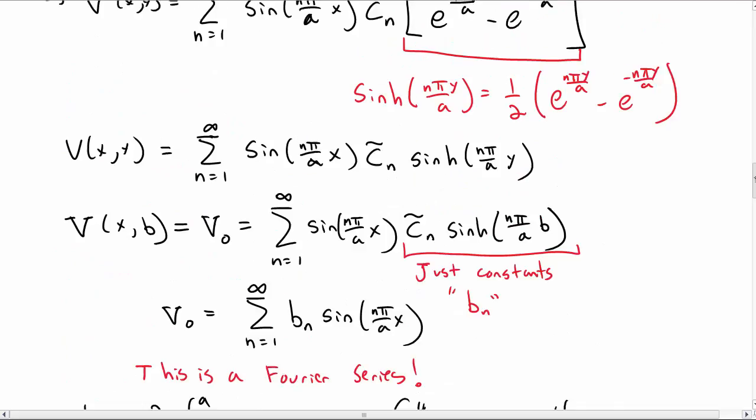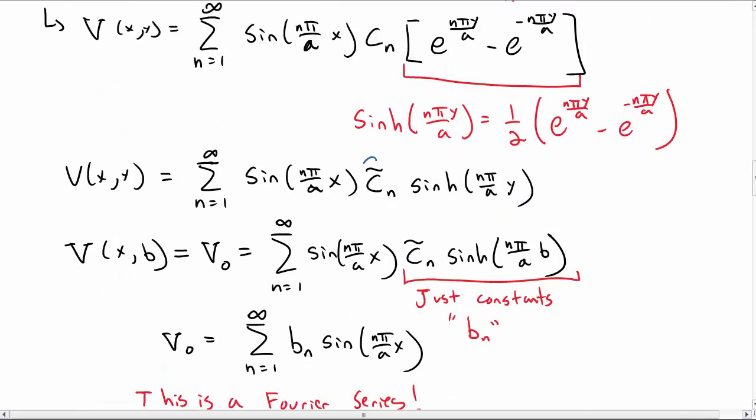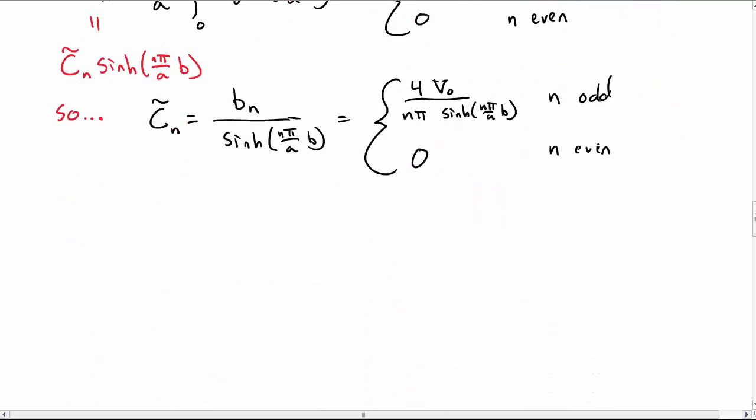So now we can plug this into our solution up above for C_n twiddle to get our final solution for V(x,y). So V as a function of x and y is now the sum from n equal 1 to infinity, 4 over n pi for n odd, V_0 sin(n pi over a x).